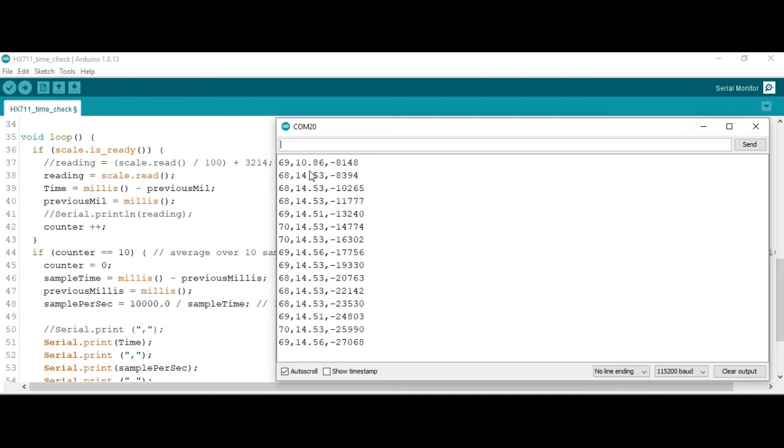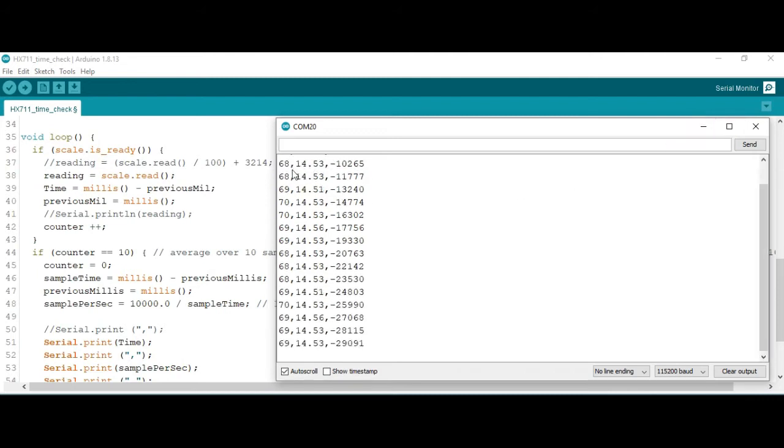We're getting a first value is time, so 68 to 70 milliseconds between samples, and so that's around 14 and a half samples per second, and the last value is the actual reading from the ADC.